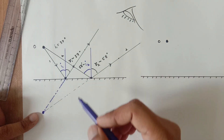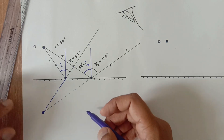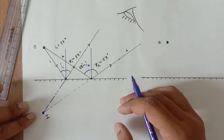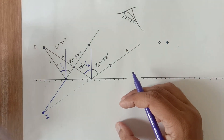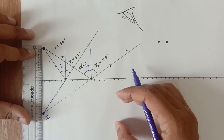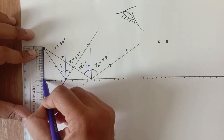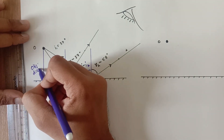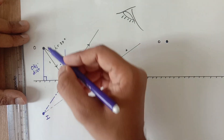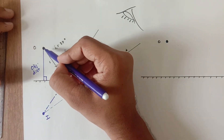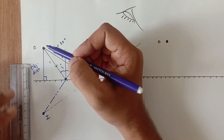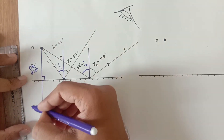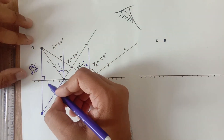Somewhere behind the mirror, we get the image. This image is virtual in nature, formed behind the mirror. Now I measure the distance from the object to the mirror — the object distance — by dropping a perpendicular line from the object to the mirror. Similarly, dropping a perpendicular from the image to the mirror gives the image distance.